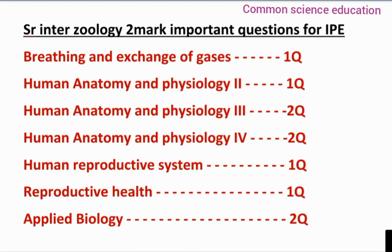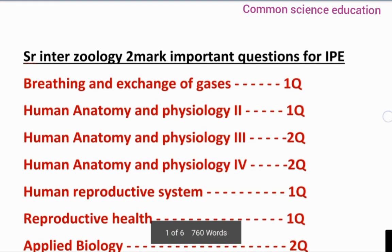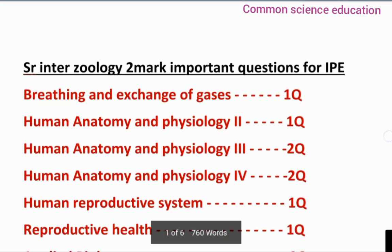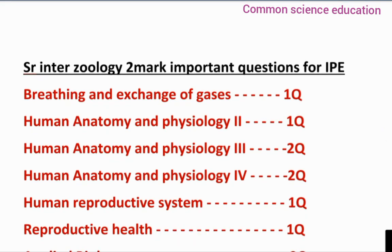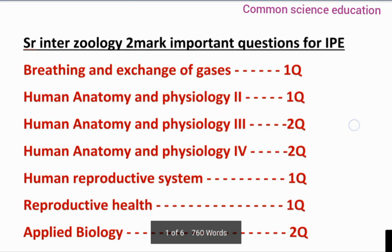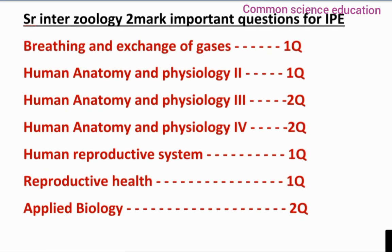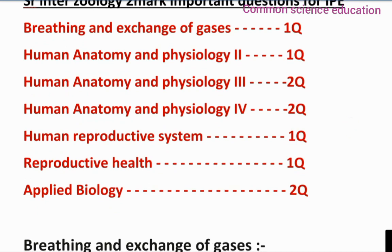2 important questions should be done from each unit. First, breathing and exchange of gases. Human anatomy and physiology — 2 questions. Human reproductive system and reproductive health. And applied biology — 2 questions. So here is the weight of 2 marks.